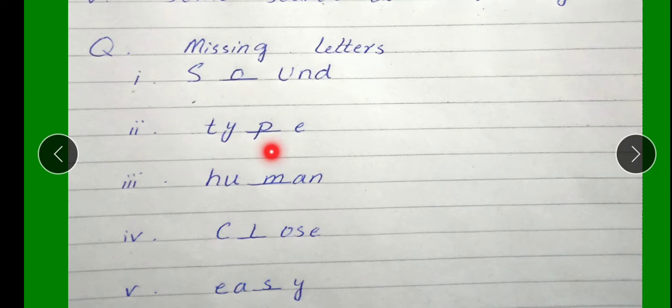Number 3: H-U-A-N M. Human. Number 4: C-O-S-E L. Close. Number 5: E-A-Y S. Easy.